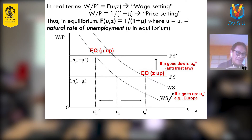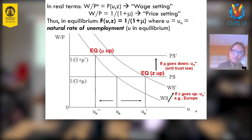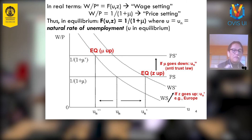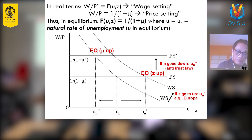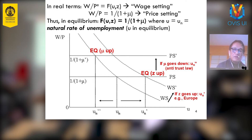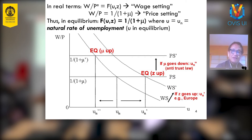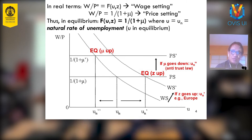Now let's play a game. Suppose Z — remember, Z is the institutional factor — suppose Z goes up. You can think of many examples: the labor union gets stronger, or the bargaining positions of laborers get stronger even without a labor union. Those are examples represented by an increase in Z, the institutional factors. What happens in that case is that the wage-setting equation, represented by this curve, will shift up.